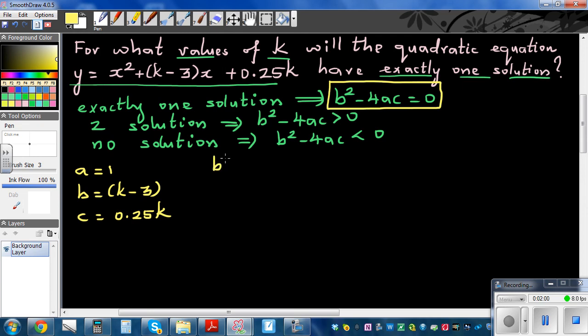So let's write b² - 4ac = 0. Those who know, you can do it yourself, pause this video and try to do it yourself. Which means (k - 3)² minus 4ac = 0.